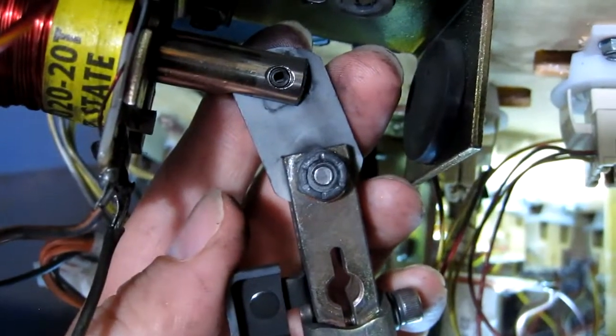Job number one is to remove the flipper bats by using this mini ratchet. Just loosen those, and I should be able to pull the bats out from the playfield.